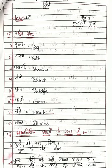Listen. Lesson number 3: Lalachi Kutta. Sangna Shabd: Kutta — Dog, Raasta — Path, Parchai — Shadow, Roti — Bread, Fool — Bridge, Paani — Water, Muh — Mouth, Nala — Stream.